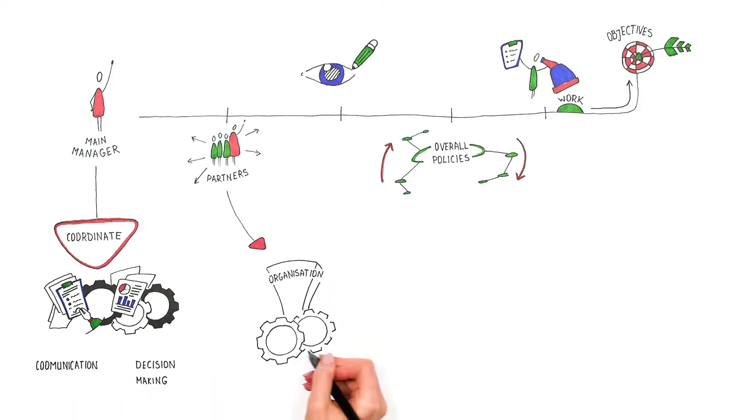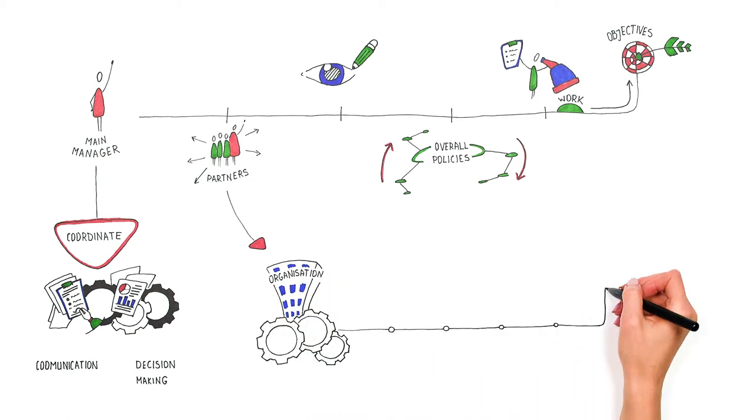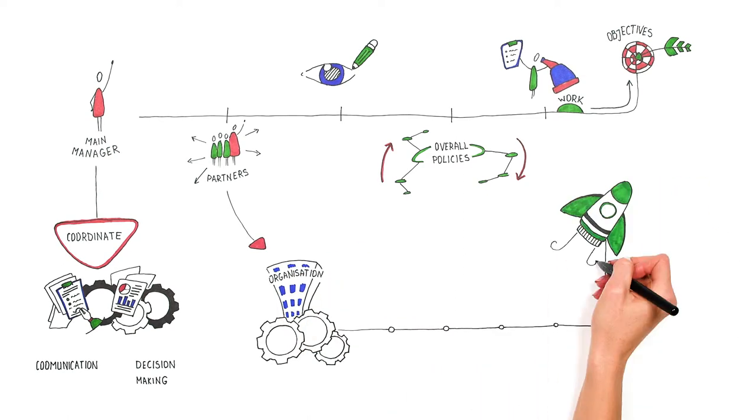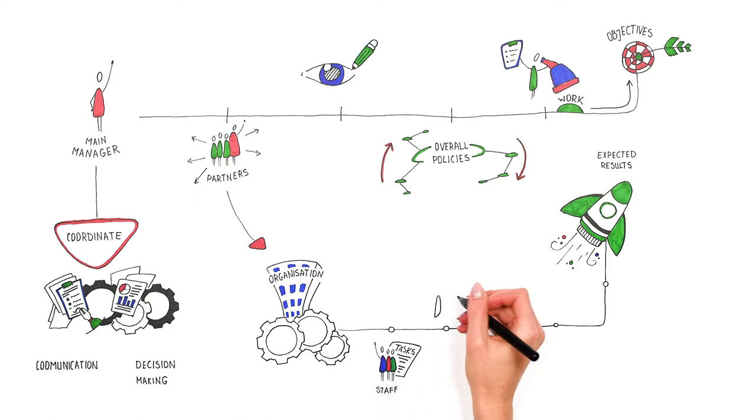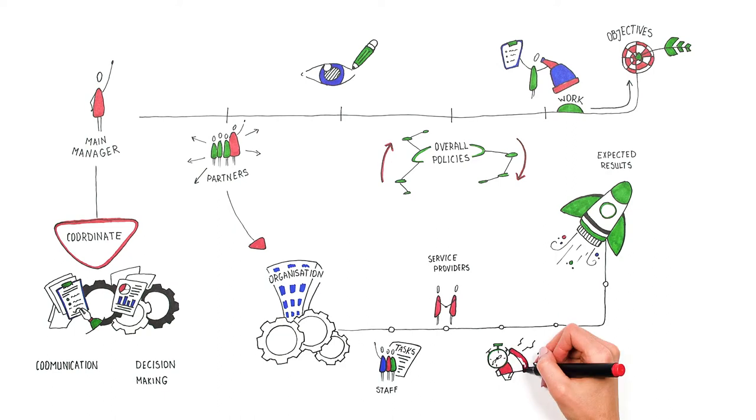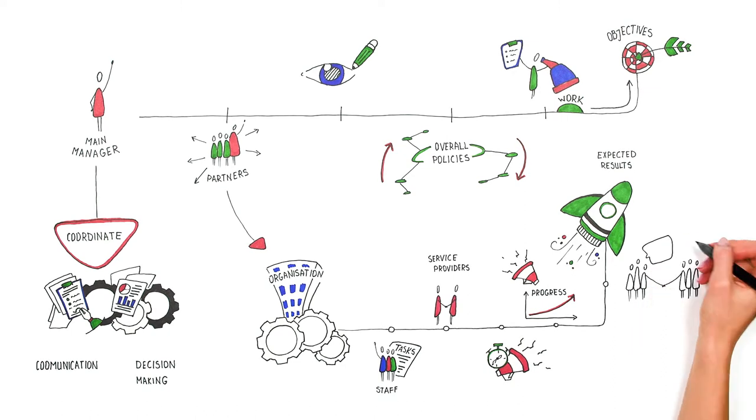Each partner organisation locally needs to handle a number of processes to achieve the expected results, define and distribute tasks for the staff, deal with external service providers, ensure timely reporting, monitor the implementation progress and report any inconsistencies, as well as work in close liaison with local partners and target groups of the project.